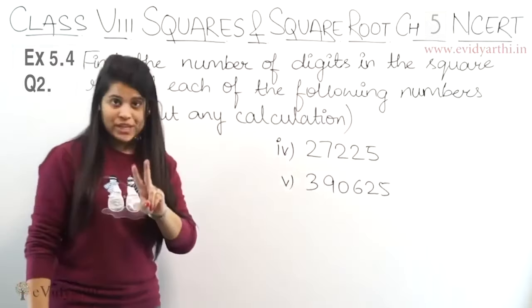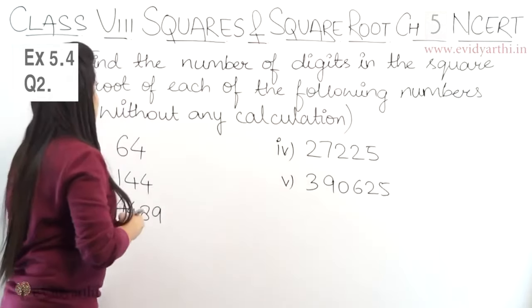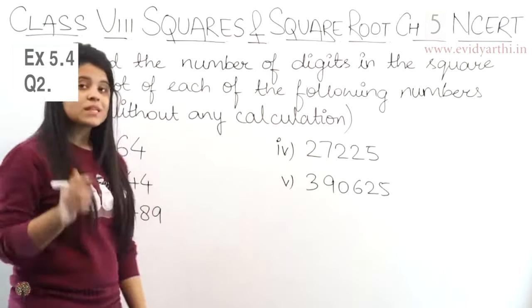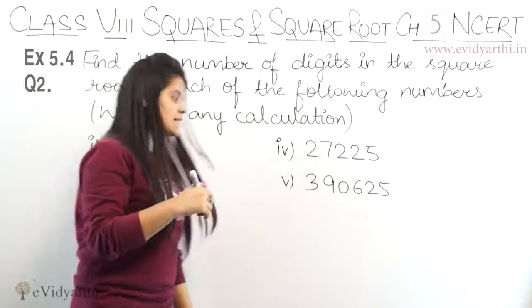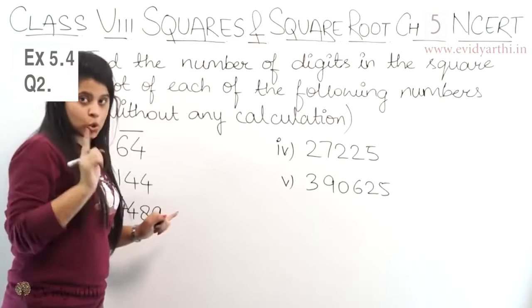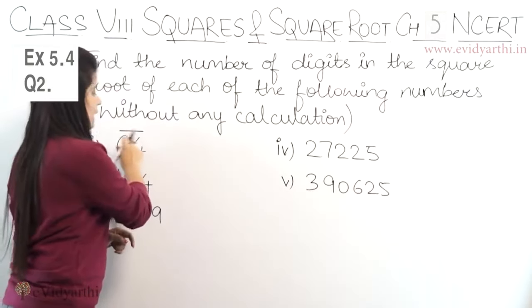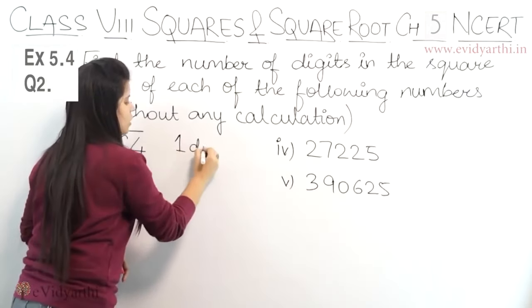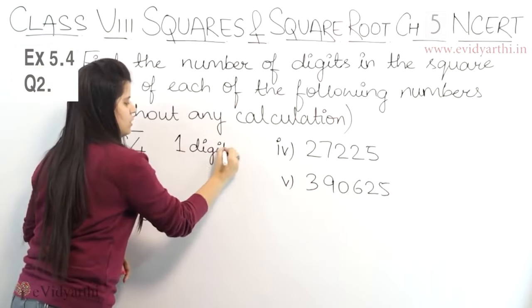We have two ways. First one is simple: we have number 64, we have bars on the right side. So we have one bar, so we have two numbers. If we have single bar, then it will be one digit square root.